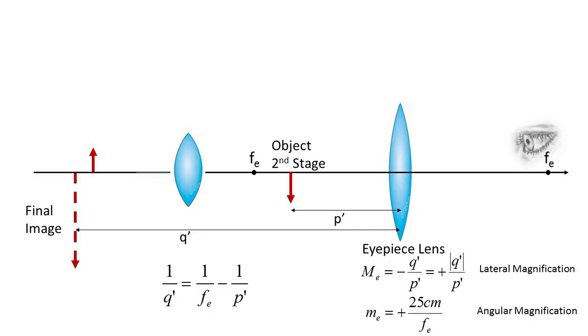Thus, the final image is virtual, enlarged, and inverted. The final image position relative to the eyepiece lens is defined as Q prime and is calculated by application of the thin lens formula to the second stage of the microscope: 1 over Q prime equals 1 over F-E minus 1 over P prime. The second stage magnification may be determined from the ratio of minus Q prime over P prime.